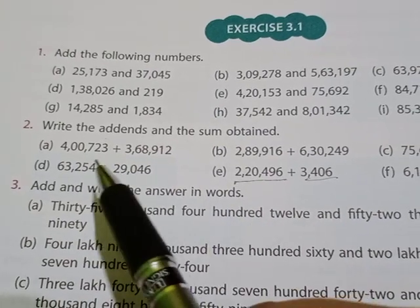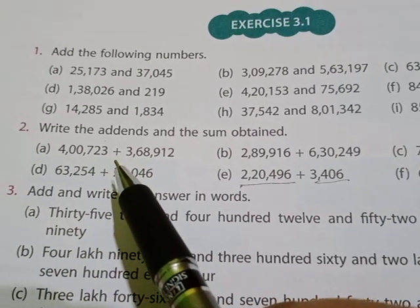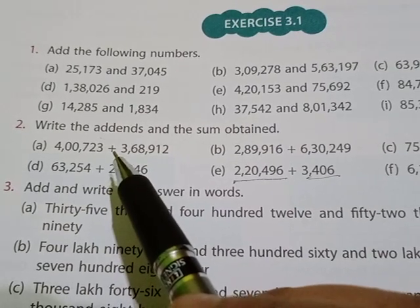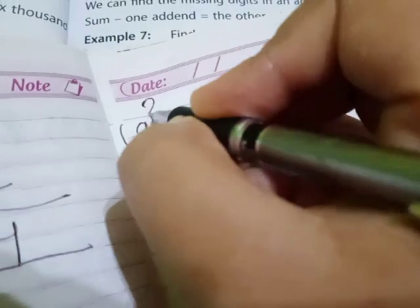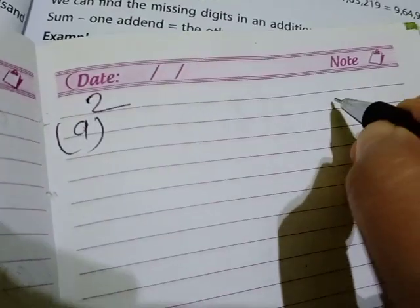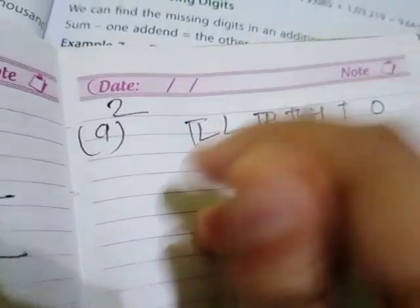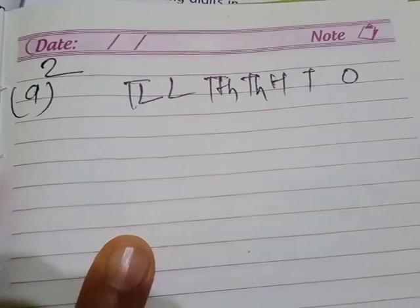We'll begin with question 2a. First of all, we have to write the place value chart: ones, tens, hundreds, thousands, ten thousands, lakhs, and ten lakhs. After this place value chart, we'll write the given numbers.